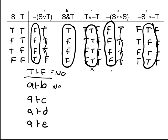Does A entail C? Is there a place where A is true and C is false? No — when A is true, C must be true. So yes, A entails C. In fact, C is a tautology, and everything entails a tautology. Does A entail D? D is a contradiction — A is true here and D is false, so A does not entail D. Does A entail E? Yes, it does: when A is true, E is also true.